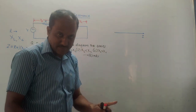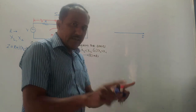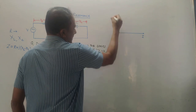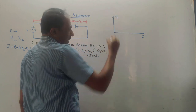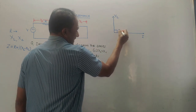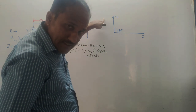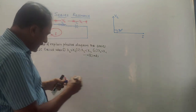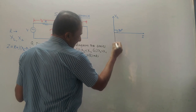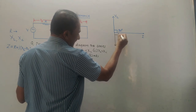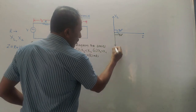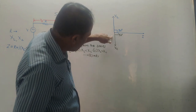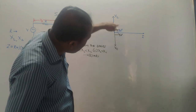Do remember this basic concept: voltage across the inductor is always leading the current by 90 degrees. Since it is leading, I will draw VL in the upward direction — this angle is 90 degrees. On the contrary, voltage across the capacitor, that is VC, is lagging the current by 90 degrees. So VC is drawn in the downward direction — VC lags current by 90 degrees, whereas VL leads current by 90 degrees.